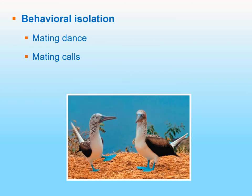Behavioral isolation involves courtship rituals. For example, it could be a mating call like in frogs — females do not recognize the male mating call unless it's a certain tone or depth of tone. It could also be a mating dance that females prefer. These behaviors direct whether a mating attempt actually occurs.